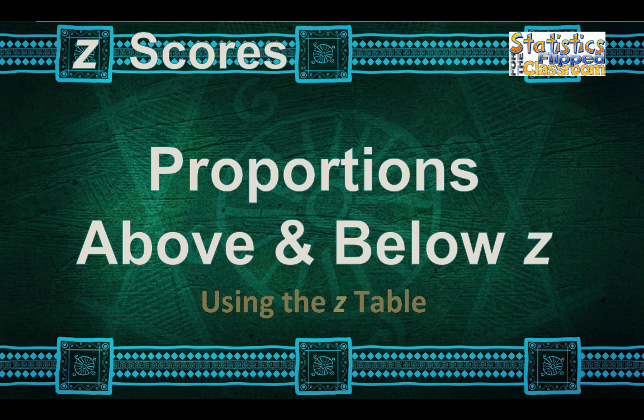We are going to begin finding proportions above or below a particular z-score. Many students find this a bit tricky, so I'd like to explain how to think through these types of problems.